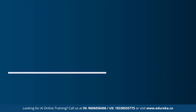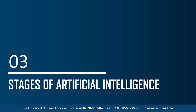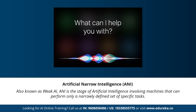Now let's understand the different stages of artificial intelligence. Many articles state that artificial general intelligence, artificial narrow intelligence, and artificial super intelligence are the different types of AI. To be more precise, these are actually three different stages of AI — the stages are completely different from the types of AI. So under the stages of artificial intelligence, we have artificial narrow intelligence, artificial general intelligence, and artificial super intelligence.